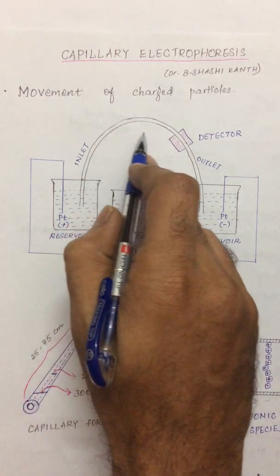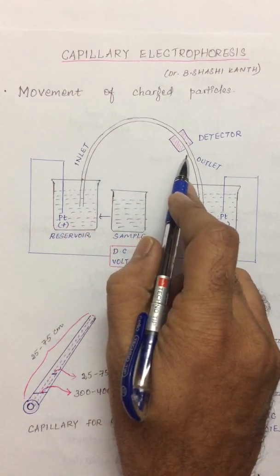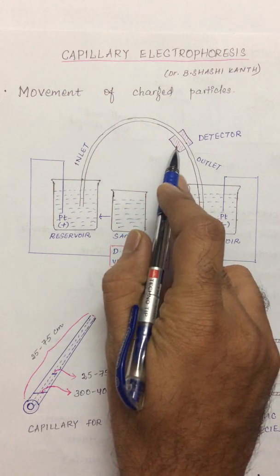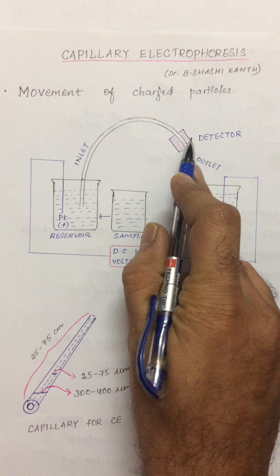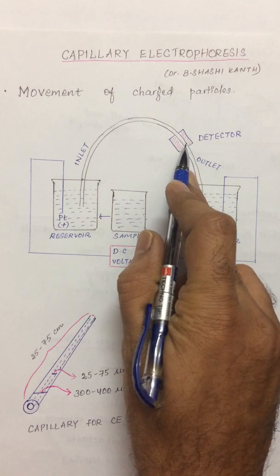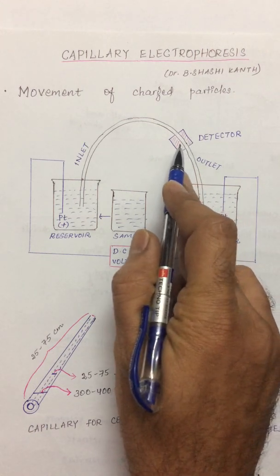At one end of the capillary a detector is connected through a transparent window so the capillary is fused in such a way that the radiation can easily fall and the analytes can easily be detected.